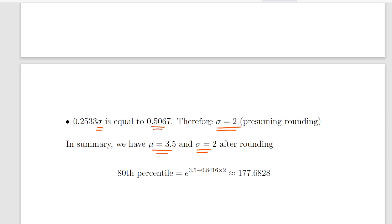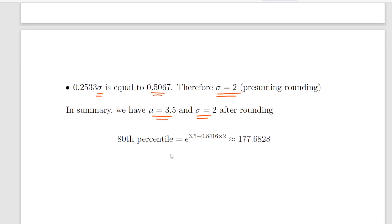Then you can just switch it to 2. Don't have to be too literal about it. So what we can do now is calculate the 80th percentile. So essentially it is the exponential of 3.5 plus 0.8416. Now that was something I gave to you earlier on, times 2. And that is roughly 177.6828.